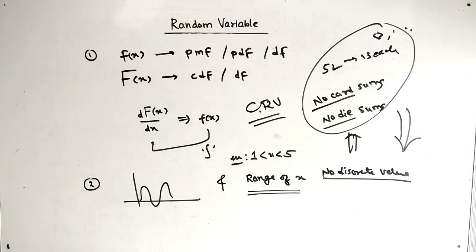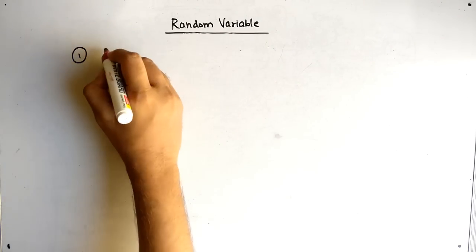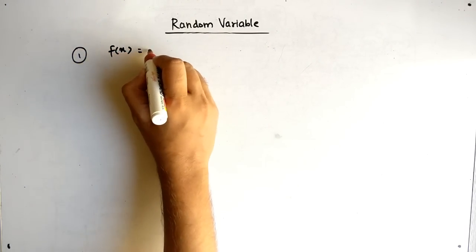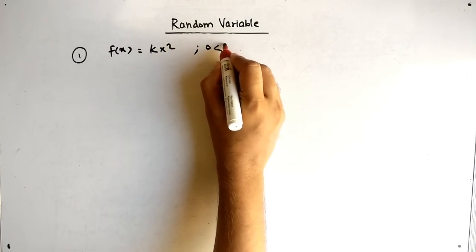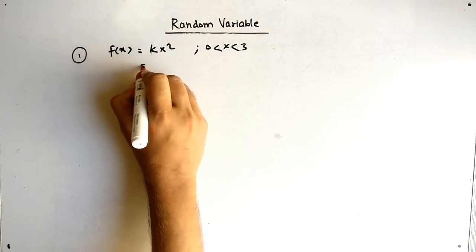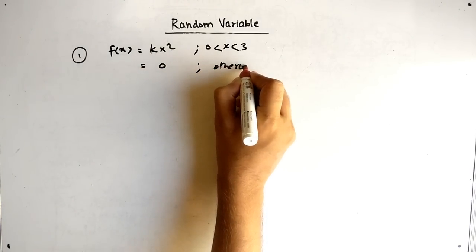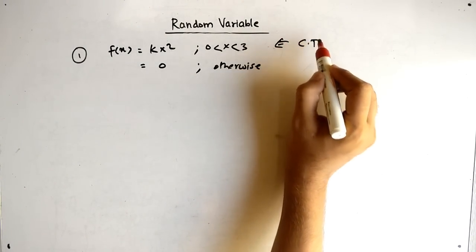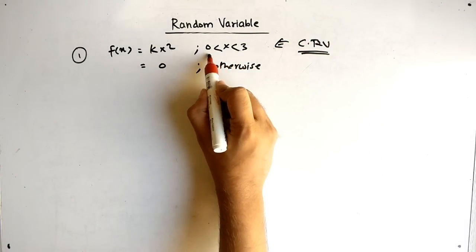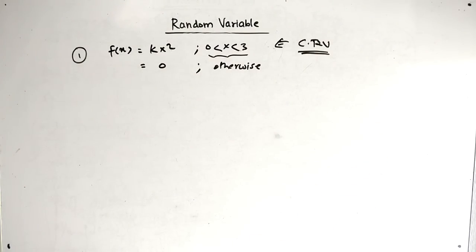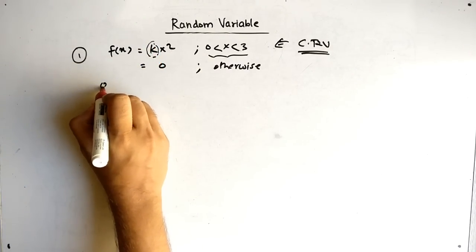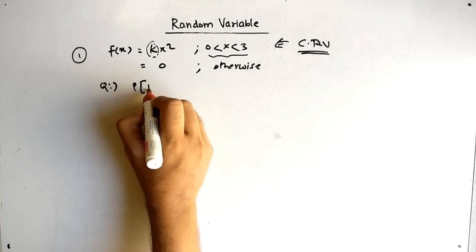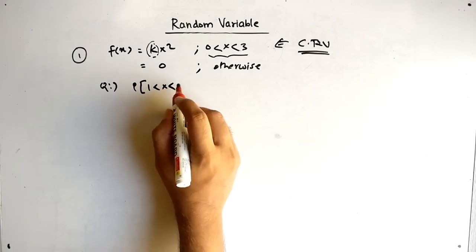Let's solve some sums. Our first question: small f(x) equals k times x squared, where x is greater than 0 and less than 3, otherwise it is 0. We know it is a continuous random variable sum because it deals with a range and not a discrete value. We need to find k, and then find the probability when x is greater than 1 and less than 2.